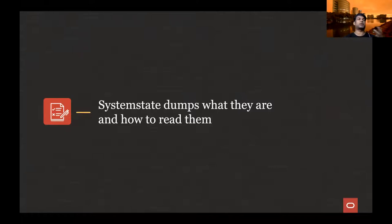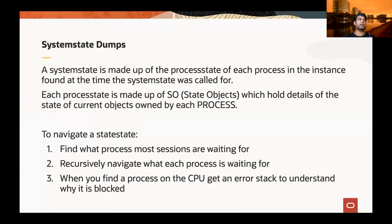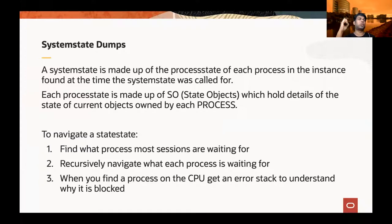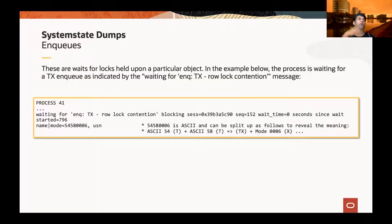System states are made up of process states representing all active processes in the database. Each process state is represented by a state object that holds details of everything held by that process — resources, cursors, wait events, enqueues. To navigate this, find which processes most sessions are waiting for, navigate each process, and find a chain to determine what the particular process is stuck on and why. We'll go through one example.